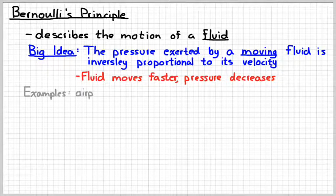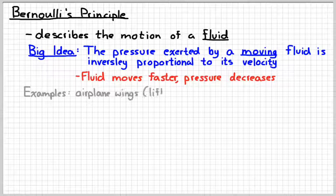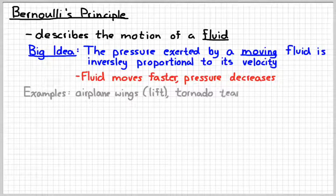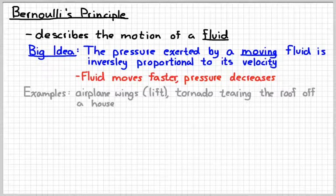So we can use this to describe lots of examples. Two real common examples that come up is that of an airplane wing. Bernoulli's Principle is what allows an airplane wing to create lift. And a tornado. Tornadoes will move really fast. So how does a tornado actually cause things to go up? How does it lift a roof off of a house, for example?